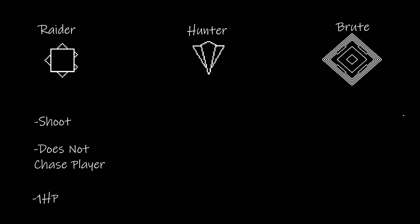The Raider ships are going to be the kind of grunts of my enemy faction. They're going to be moving in a random direction when they're first created, until the player gets close enough to them. When the player gets close they're going to turn to face the player and shoot at them, although they'll continue to move in their set direction. Fairly simple behavior for those.